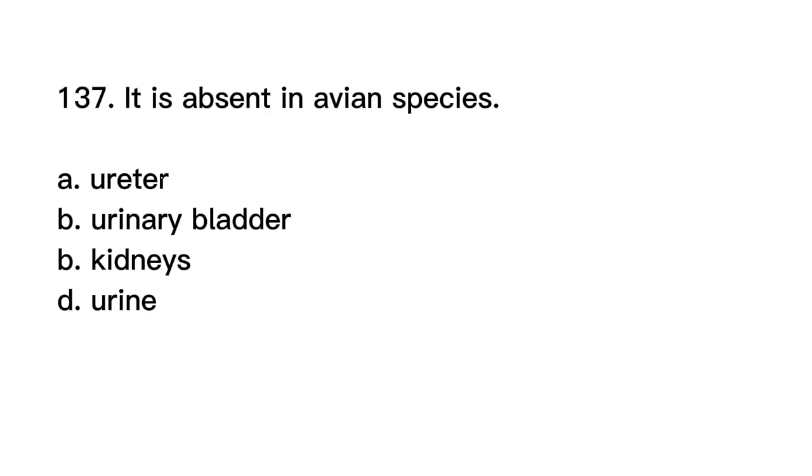Number 137. It is absent in avian species. A. Ureter. B. Urinary bladder. C. Kidneys. D. Urine. Correct answer is letter B. Urinary bladder.